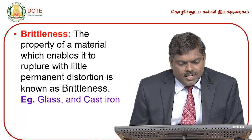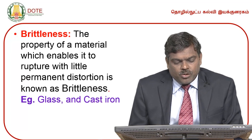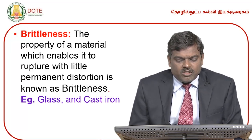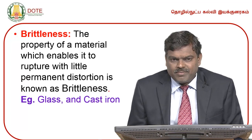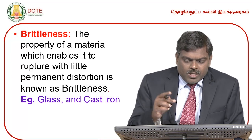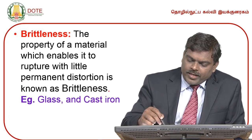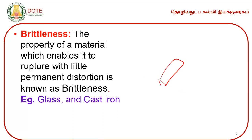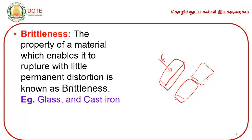Brittleness is the property of a material which enables it to rupture with little permanent distortion. Best examples are glass and cast iron. When a force is applied on a brittle object, it fails with little deformation — it is a permanent distortion. This is known as brittleness.